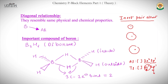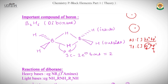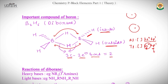Now we move towards the important compounds of Boron, which are important from a JEE perspective. B₂H₆, which is also called Diborane. This is the structure of B₂H₆ using dash and wedge notation. The bridging bonds are called 3-center 2-electron bonds, and the number of such bonds in B₂H₆ is 2.